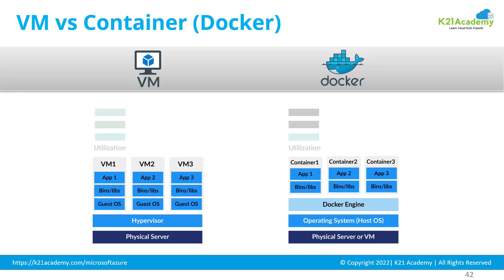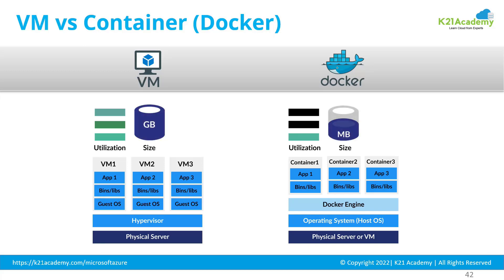I'm using the words Docker and container interchangeably, but Docker is just one type of container — there are different container options. The advantage of containers is that their storage footprint is very minimal, and the memory and CPU needed to run the container runtime is quite small. The application itself may use more resources depending on its needs, but the underlying operating system-level resources are very light. Memory usage is in MBs and containers start up in just a few seconds or under a second.